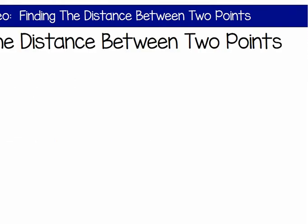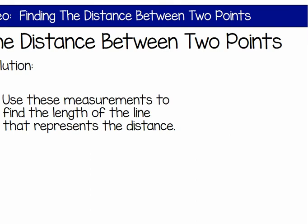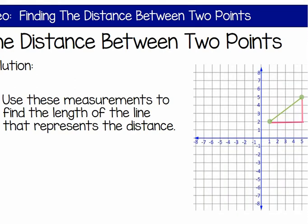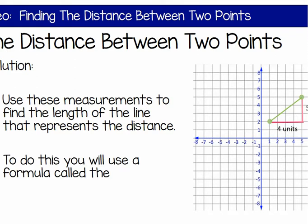The distance between the two points—we will now use these measurements to find the length of the line that represents the distance. To do this, we will use a formula called the Pythagorean Theorem.